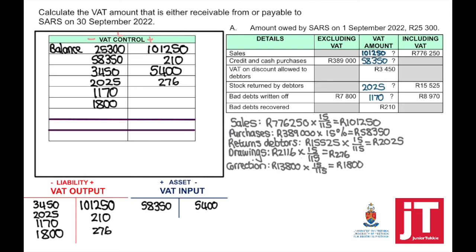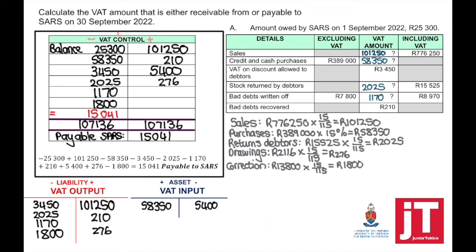Once we've completed all the transactions, we can calculate whether we owe SARS or SARS owes us. Looking at the VAT control account, the credit side is more than the debit side. Adding up the credit side and subtracting everything on the debit side gives R15,041 as the amount payable to SARS. Just a reminder: if you prefer not to do a T-account and just do the calculations, that is 100% correct as well.